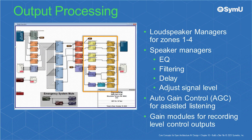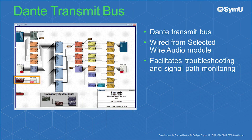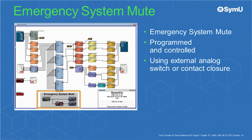Loudspeaker managers for zones one through four are used for output processing. Use the speaker managers for EQ, filtering, delay, and to adjust the signal level for each zone, all within a single module. Auto gain control is used for assisted listening. Gain modules are used for level control for the record and restroom outputs. The site file also includes a Dante transmit bus wired from the selected wire audio module, facilitating troubleshooting and monitoring of the signal path. An emergency system mute scenario will also be programmed and controlled using an external analog switch or contact closure. Now let's begin building your site file.